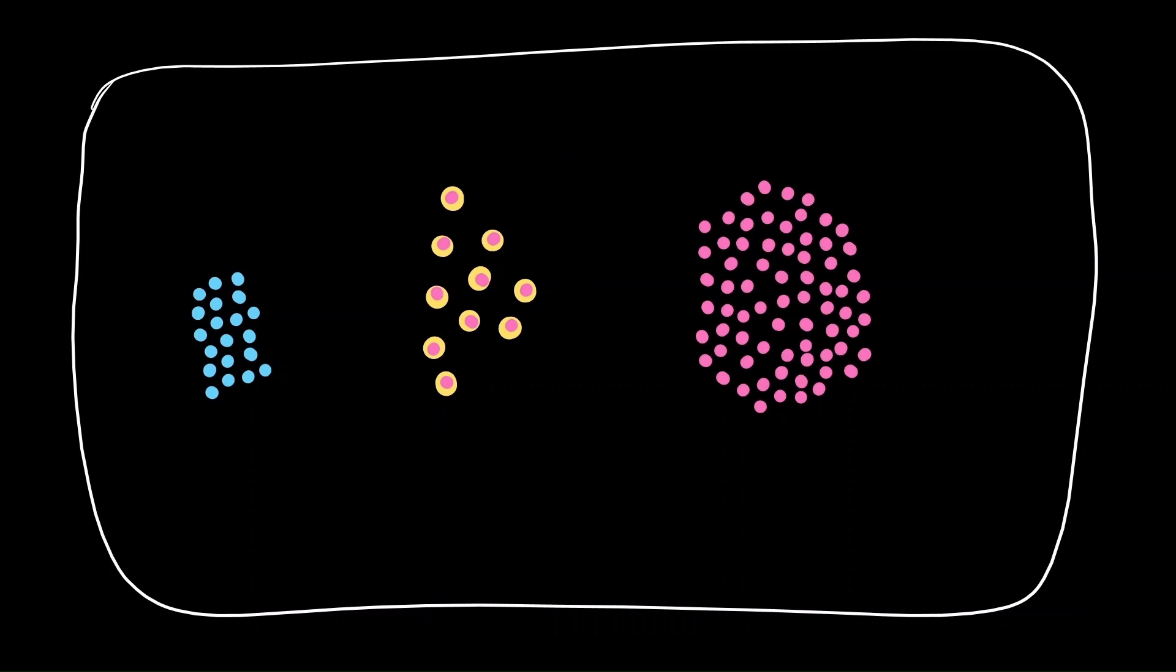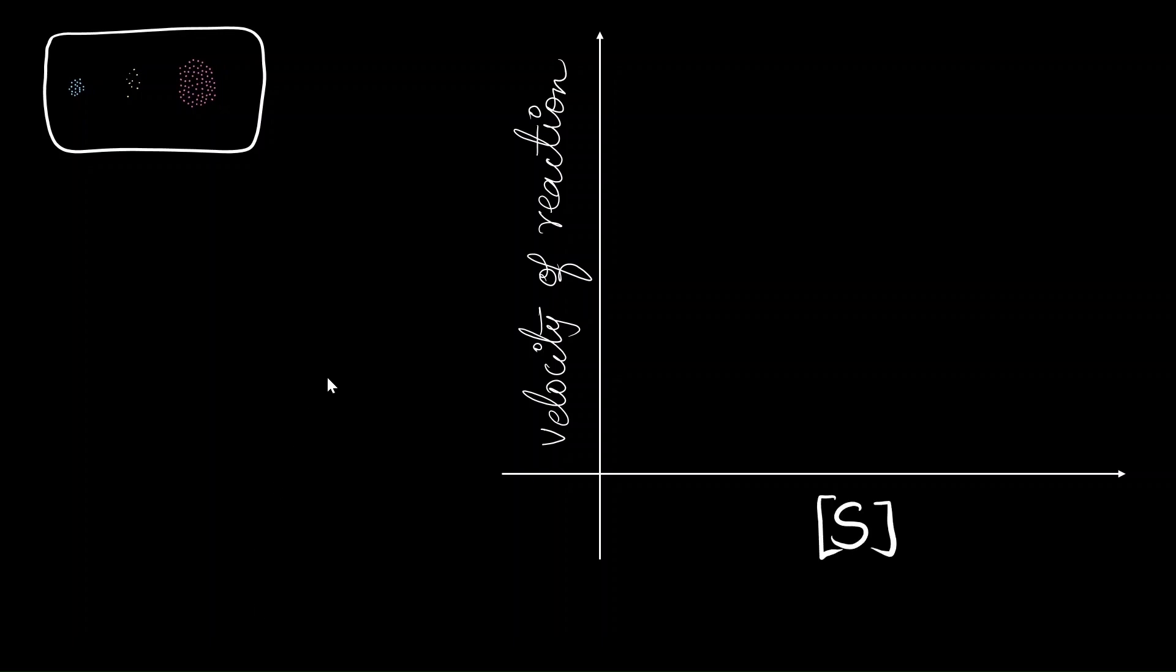And as more and more enzymes and substrate molecules interact with each other, the speed of the reaction increases. If I were to visualize this particular reaction, the y-axis would represent the velocity of the reaction. The x-axis represents the substrate concentration. As the number of enzyme and substrate molecules interact, the speed of the reaction increases. That is represented by this exponentially extending curve.